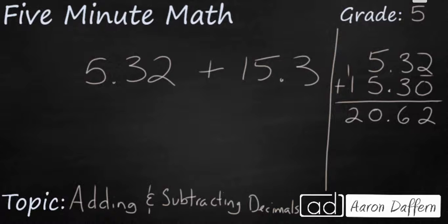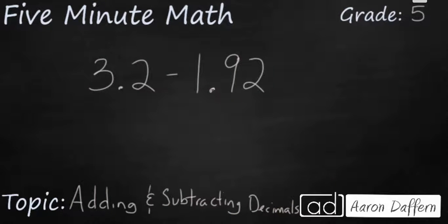Now let's try subtraction. We're going to look at two different subtraction types of problems. The first one is when you have digits going to different amounts here. So we have 3 and 2 tenths minus 1 and 92 hundredths. So once again we need to line them up here.